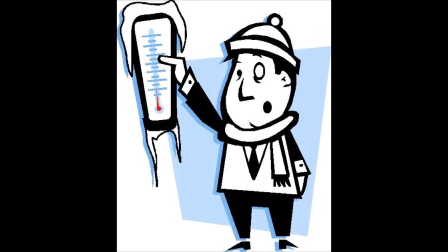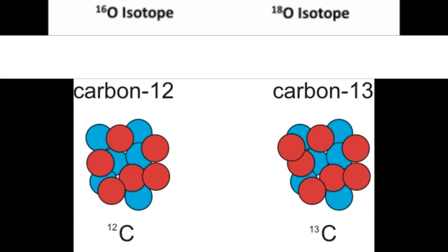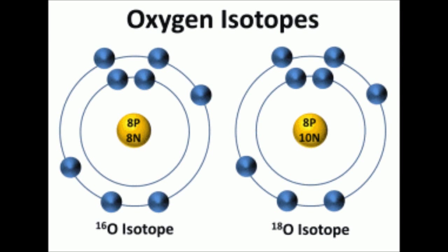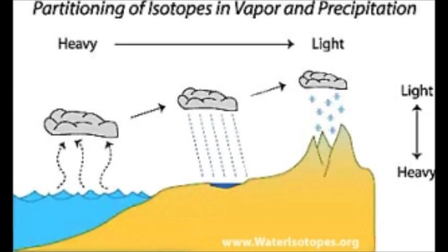First of all, what is isotopic fractionation? Let's break it down. An isotope is one of two or more atoms having the same atomic number but different mass numbers. And to fractionate means to divide or separate into parts or break up. So isotopic fractionation means to separate atoms at different mass numbers.